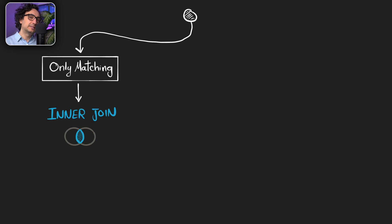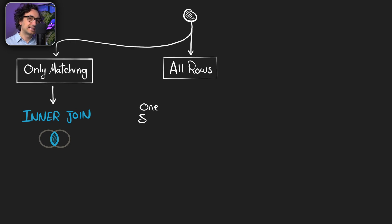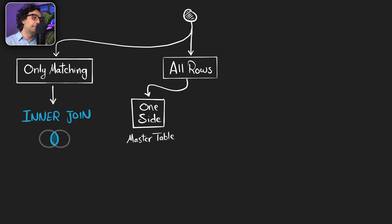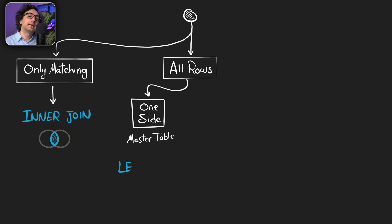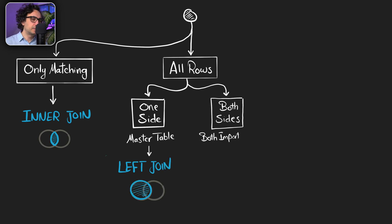But if I want to see everything — all the data — and I don't want to miss anything after joining two tables, then I take a different path. I ask myself: is there one side more important than the other? Am I interested in all data from one table, like a main table or a master table? Then I go and use the left join. But if I want to see all the data from all tables in my query and there's no one table more important than the other, then I go with the full join.